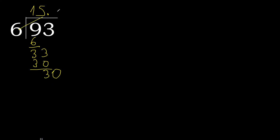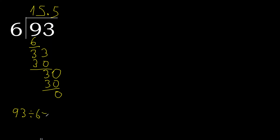6 multiplied by 5 is exact: 30. So 30 minus 30 is 0 — finish. Therefore 93 divided by 6 is 15.5.